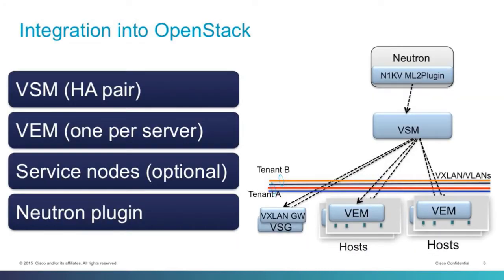The Virtual Supervisor Module talks to OpenStack using the ML2 network plugin driver. At a high level, the components for this architecture include the Virtual Supervisor Module, which runs as a virtual machine, the Virtual Ethernet Module — one per server — optional service nodes, and the Neutron plugin which exposes the functionality of Nexus 1000V to OpenStack.